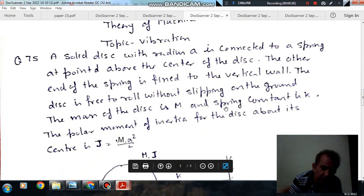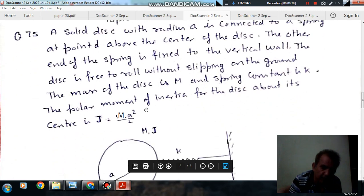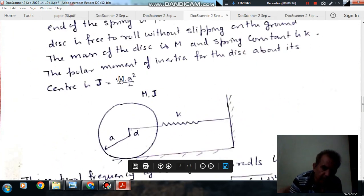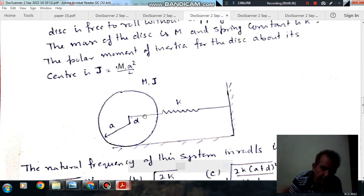The mass of the disk is M, the spring constant is K. The polar moment of inertia about its center J is equal to mA² by 2. So this is the disk of radius A and a spring is connected at a distance B from the center.